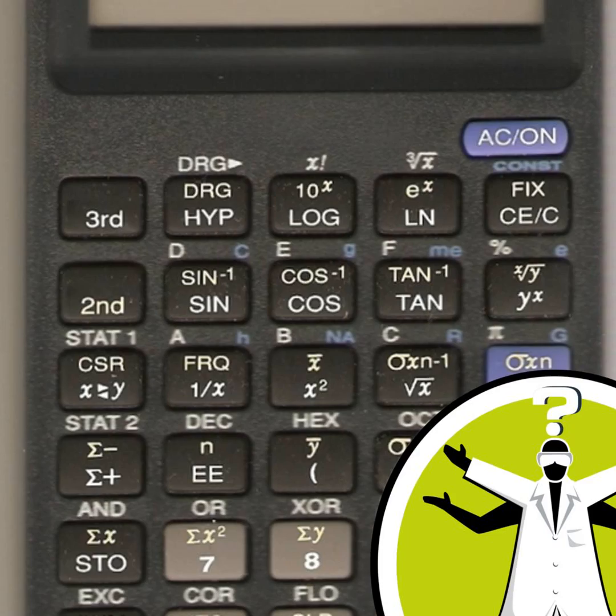Part of the reason why calculators are so quick is because at their core, they're relying on electrical impulses, which travel at the speed of light. So calculators, much like computers, translate everything into binary or base two, because it allows numbers to be translated into electrical signals that are either on, one, or off, zero.